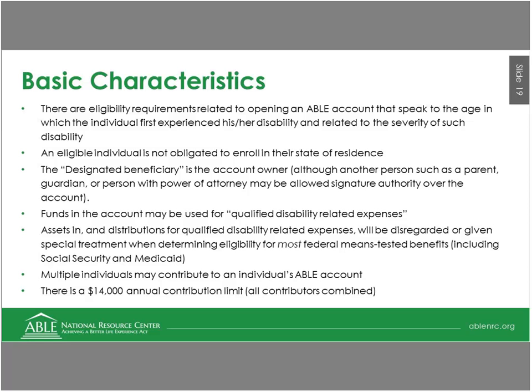Anybody can contribute into a person's ABLE account — that includes the beneficiary's family, friends, and the beneficiary themselves, perhaps through funds earned through employment. Despite the fact that anybody can contribute, all contributions combined are not allowed to exceed $14,000 in any given tax year — from January 1 to December 31. Come the next year, it starts over and you can contribute an additional up to $14,000 in the following tax year, and the account can grow.